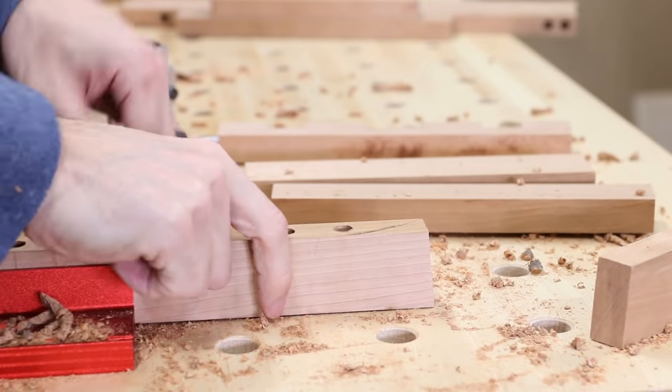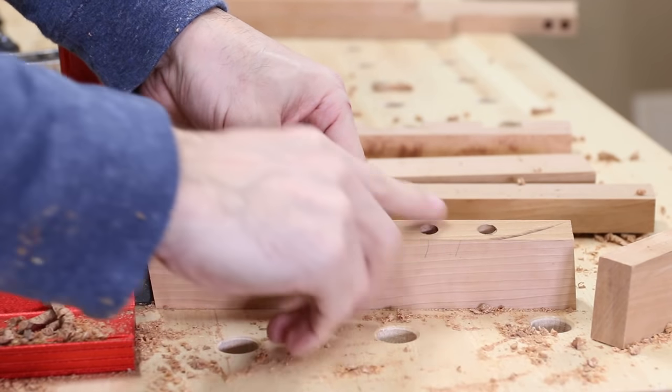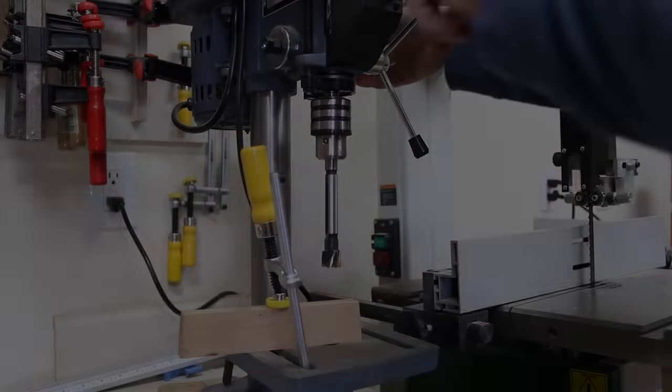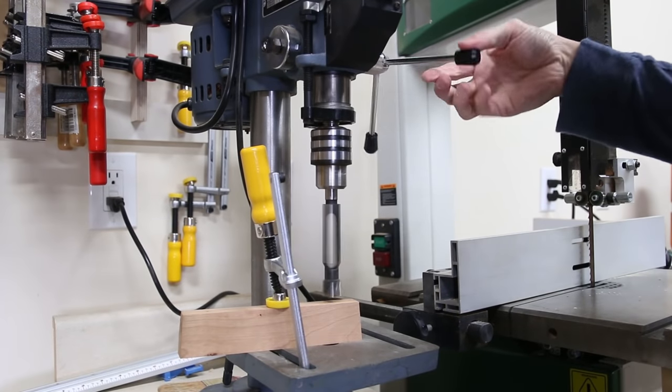Now sometimes you might get in a hurry and let's just say you align the jig with the wrong mark and drill a hole where it shouldn't be. Hypothetically of course. Well no worries, all you need to do is cut a 3/8 inch plug to fill the hole.